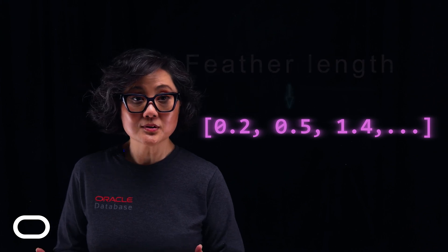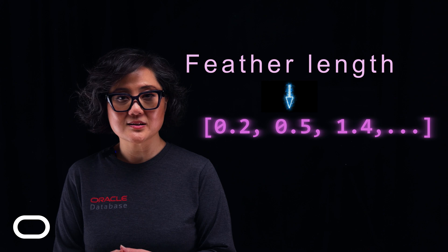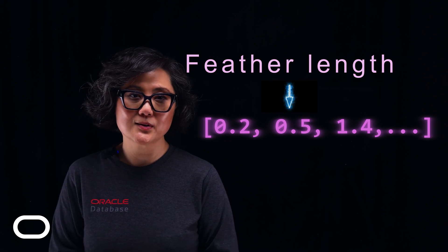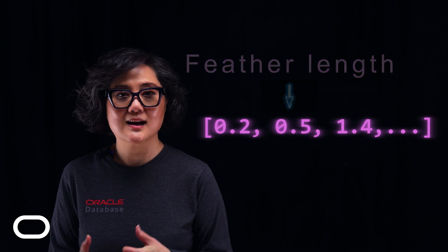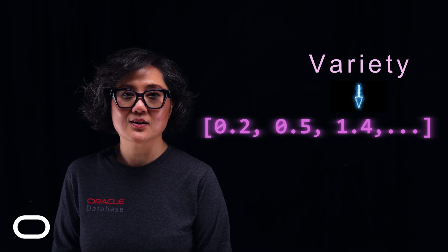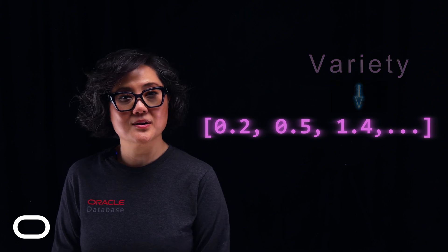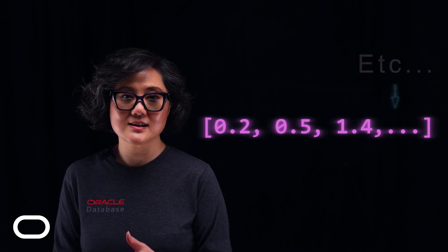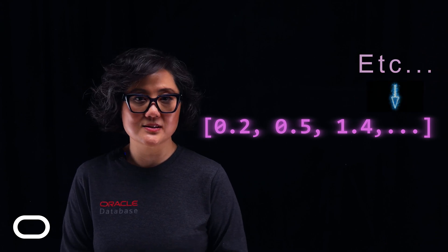Now, a computer running a vector database can use the embeddings to group, compare, and quickly locate items based on nuanced, hierarchical relationships. In its essence, vector embeddings are arrays of real numbers, and the process of generating a vector for a data object is called vectorization.